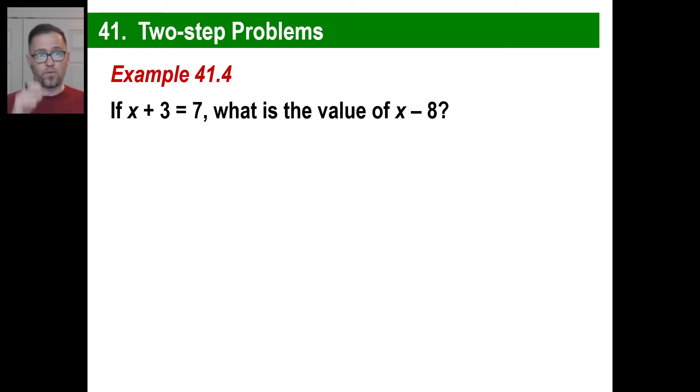The second kind of problem we're doing in Lesson 41 is two-step problems. So this is a piece of cake. Really easy. If X plus three equals seven, what is the value of X minus eight? Well, all you need to do is solve for X. Subtract three from both sides. X is equal to four. Since X is equal to four, what's the value of X minus eight? Well, that means I'm trying to find out what the value of four minus eight is. And the answer is negative four. Piece of cake, right? Here's another one. If X minus five is seven, what's the value of X plus four? Well, that's a piece of cake. You just add five. X is equal to seven plus five. So the X is 12. What's the value of 12 plus four? 12 plus four is 16. Good enough.